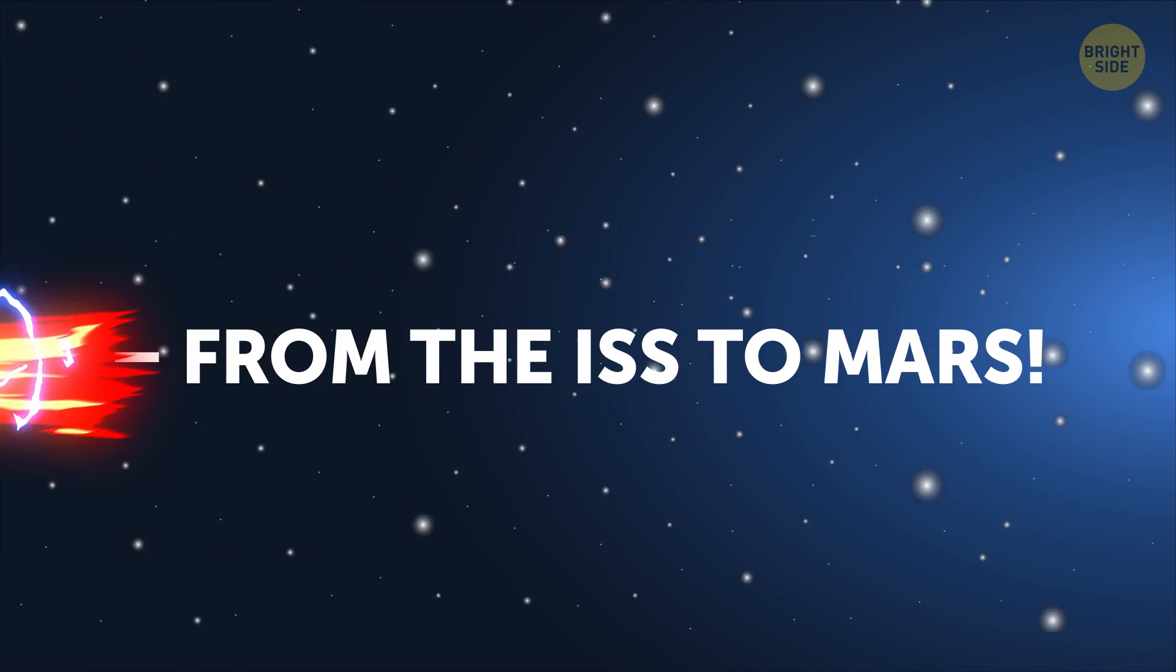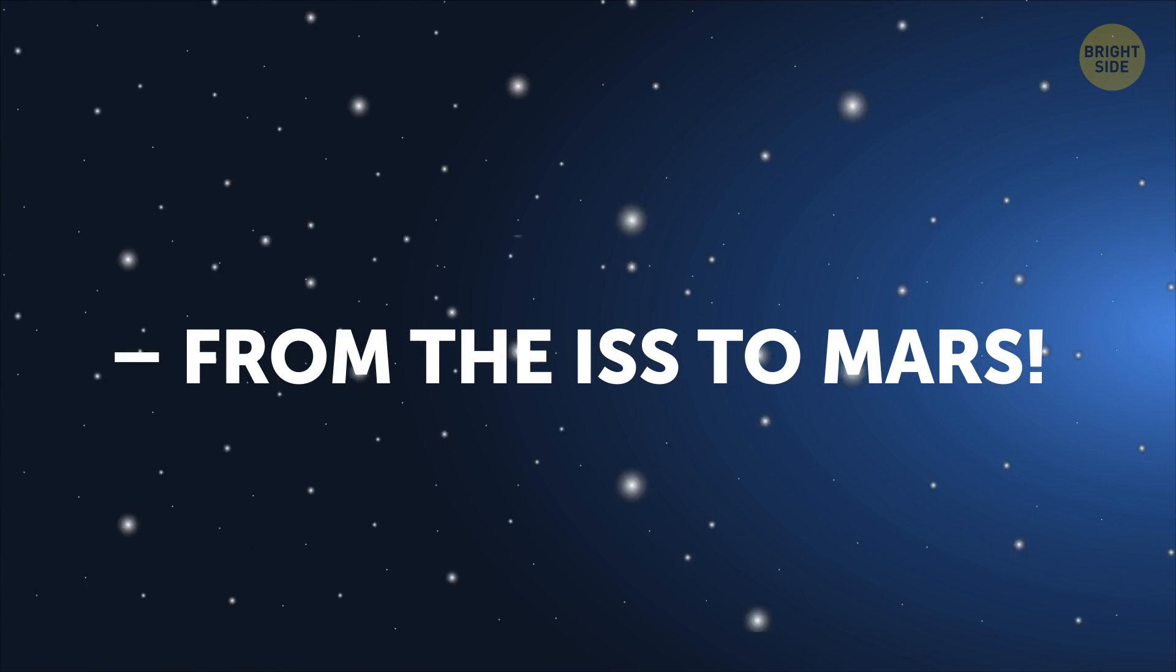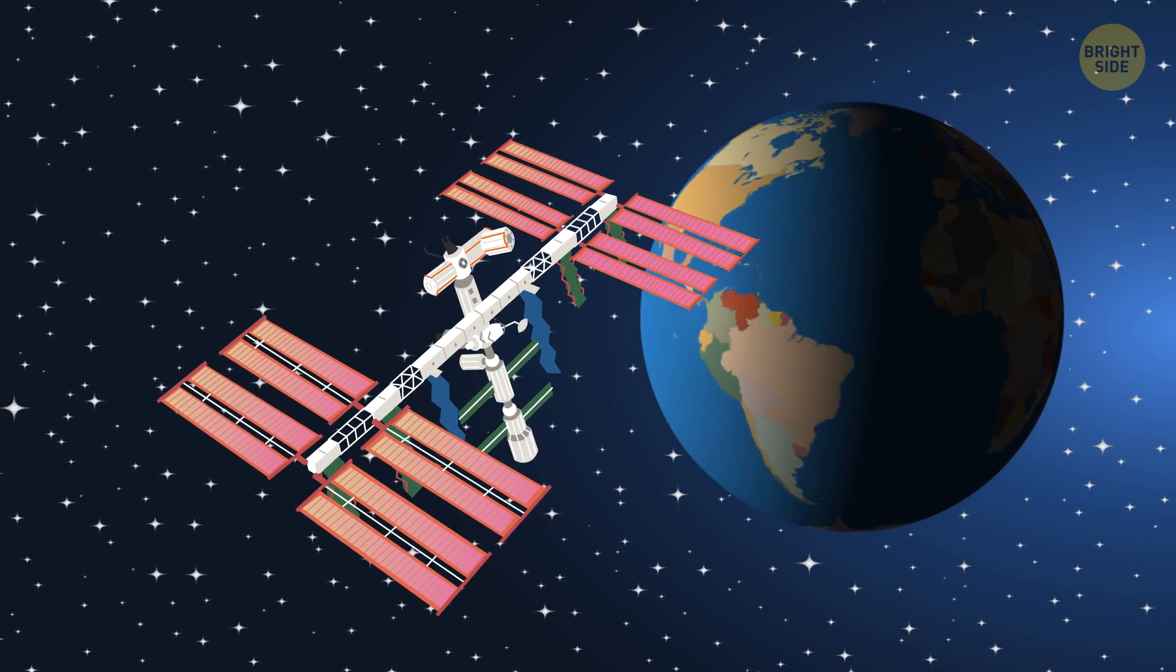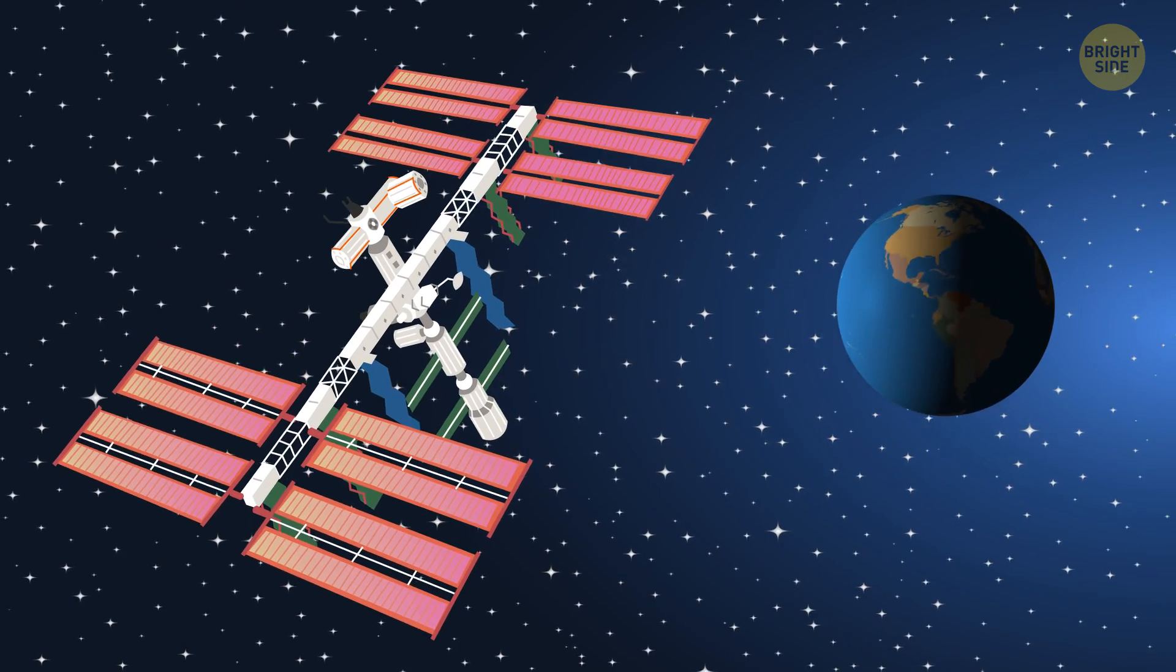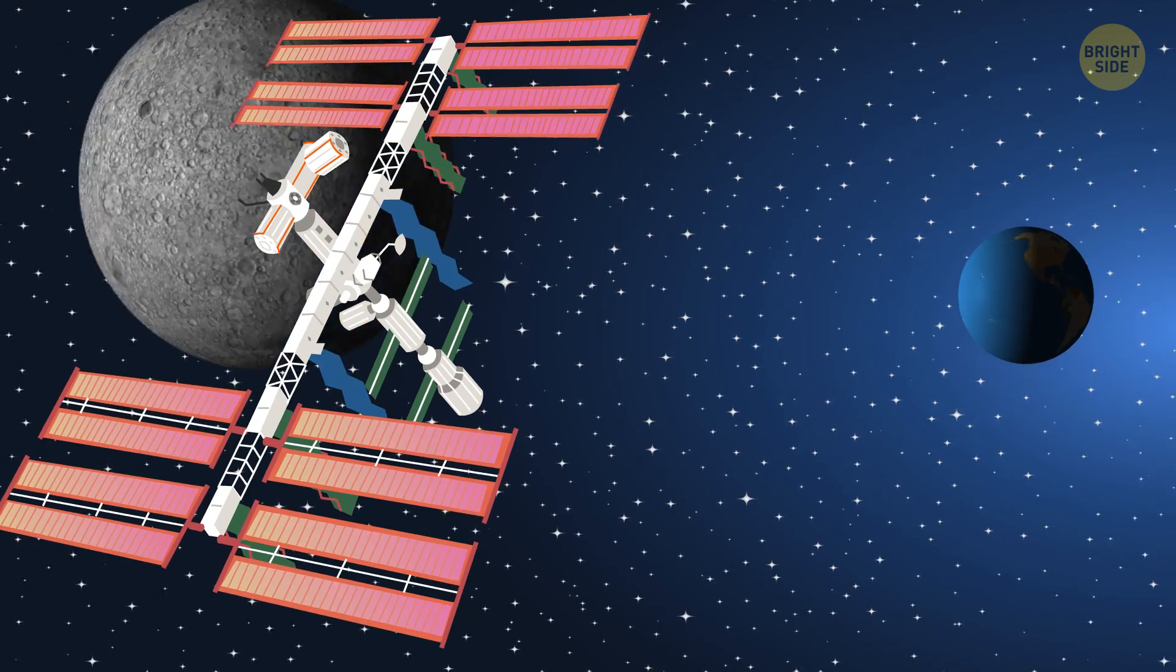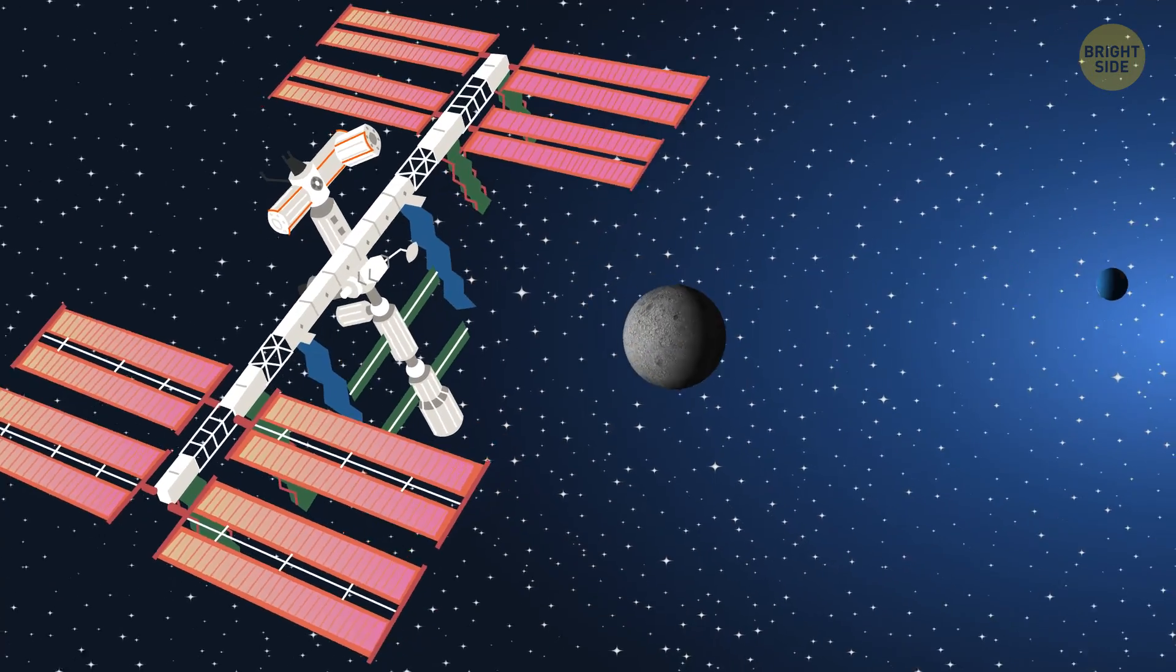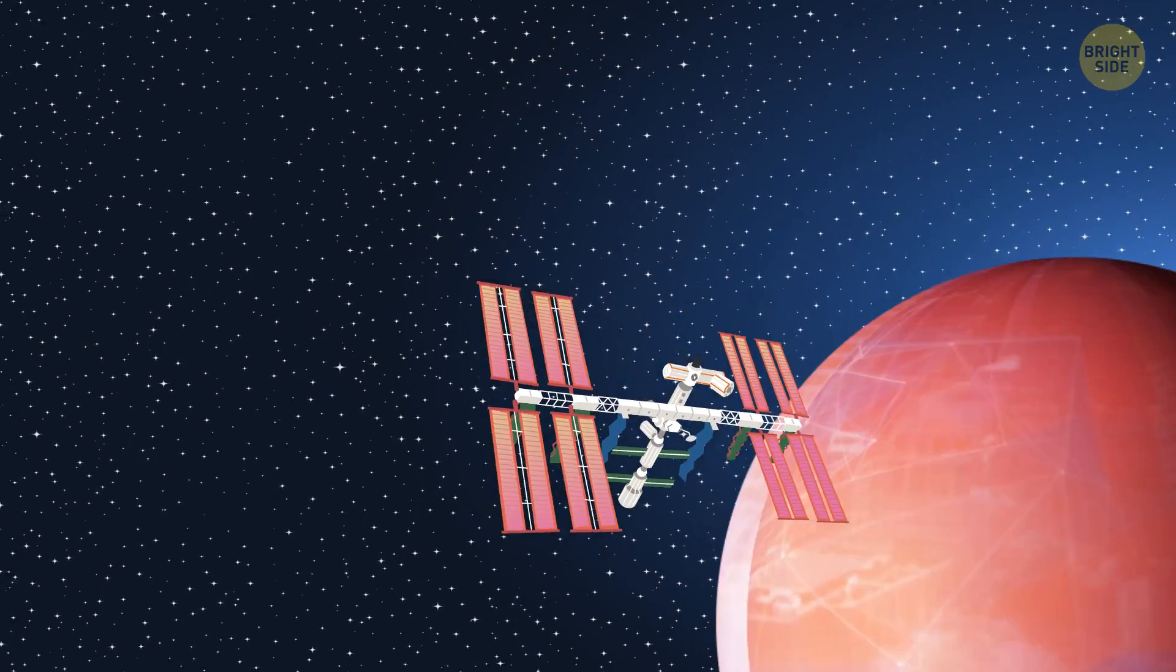From the ISS to Mars. The cool thing about the International Space Station becoming more and more self-sufficient is that it's almost like a trial for larger missions in the future. I'm talking about colonizing the red planet, baby.